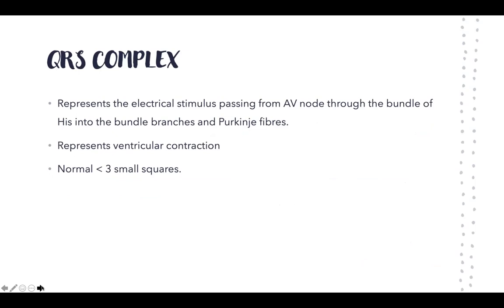Now we'll talk about the QRS complex. This is the electrical stimulus passing from the AV node into the bundle branches and into the Purkinje fibers, and all together it represents ventricular contraction. Normally this is under three small squares in width.